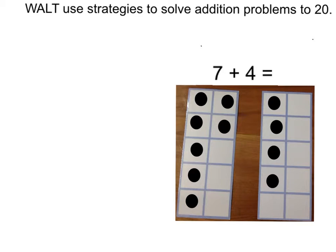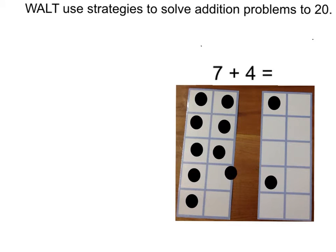The strategy I'm going to use is making a tidy number. To make my tidy number, I'm going to take three from the four to give to the seven. One, two, three. That makes ten.